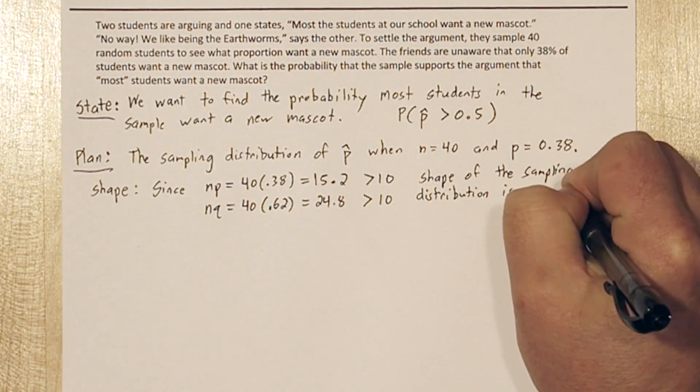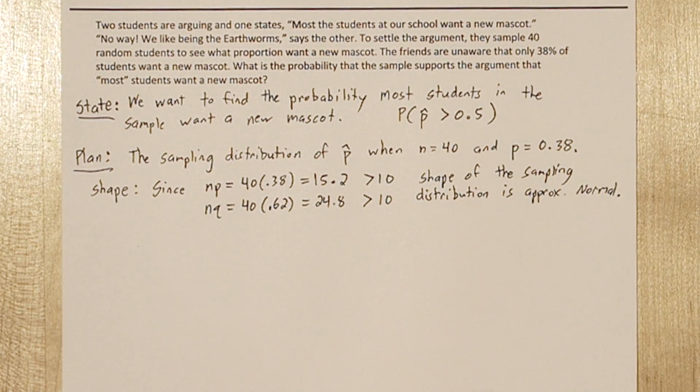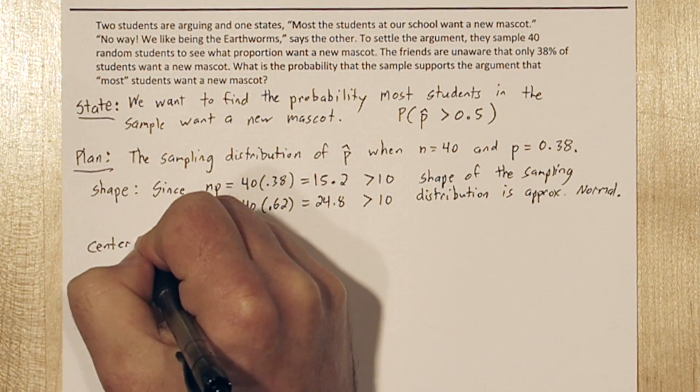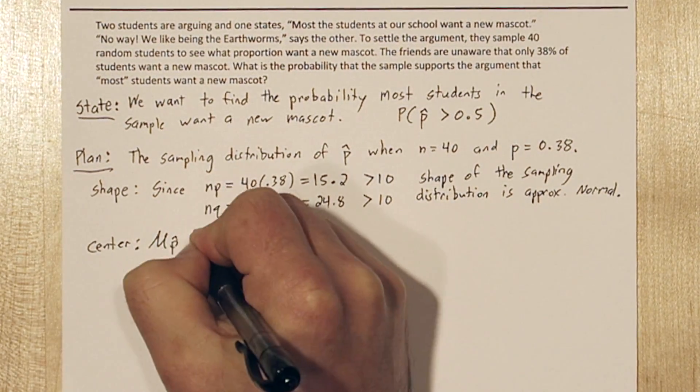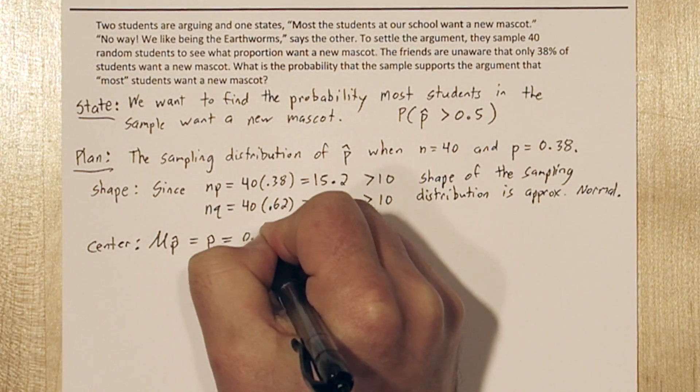This is good news because we can use normal calculations. We also know the center of the p-hat is going to be at p, the true parameter value, 0.38.